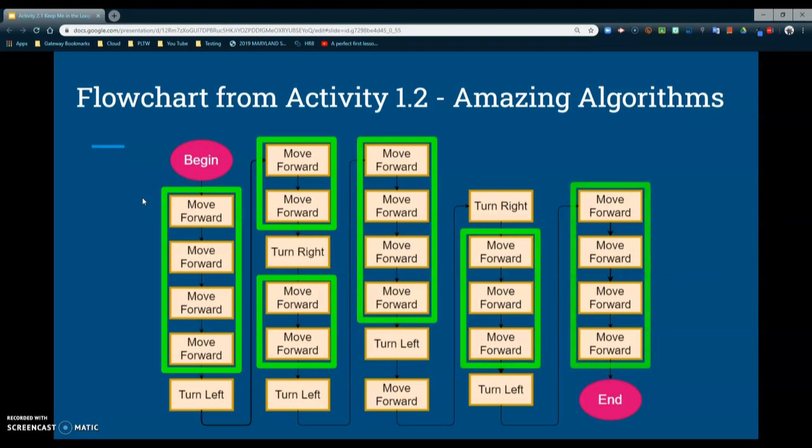That redundant code is highlighted in the green boxes. In those green boxes you'll notice several commands that are the same or repeating and they are in a sequential order. This creates code that is very long and can be confusing to the user. What we want to do in this activity is remove that redundant code, create an abstraction, and place it into a procedure.